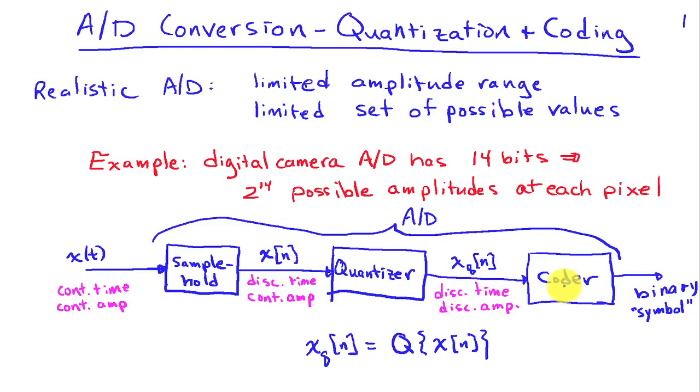And then finally, the output of the A to D is using a binary format and converting this discrete amplitude value into a binary symbol. That's a coding process. So we're going to talk about both the quantizer, the quantized output is the quantizer q applied to x of n, and we're also going to talk a little bit about coding.